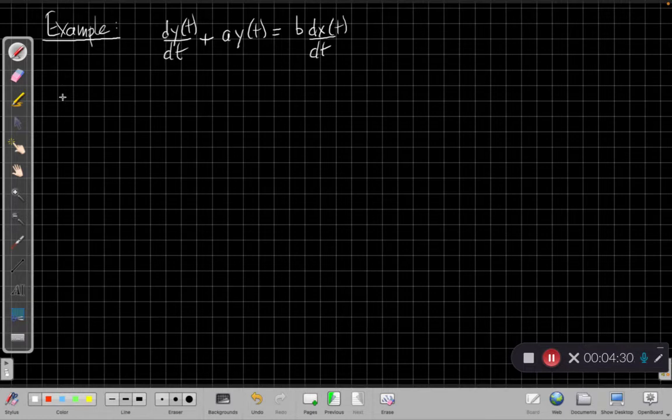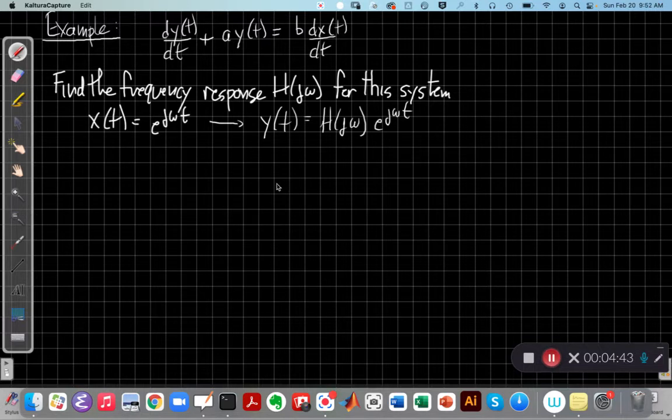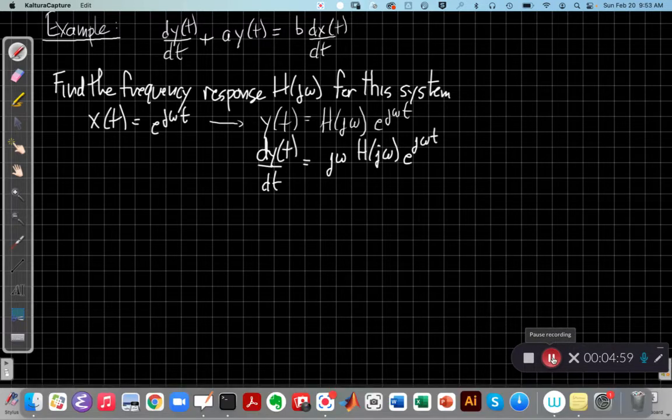So to find the frequency response for the system, we're going to first assume the input is the eigenfunction and then plug that in along with what we know from the eigenfunction property. Here's just reiterating what we had - the eigenfunction property. And then with derivatives, H(jω) doesn't depend on t, so it's just a scaling factor. For example, dy/dt here will be jω times what we have for y. And similarly on the other side, we can write down dx/dt.